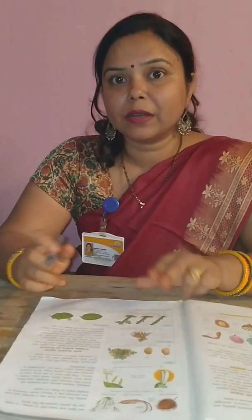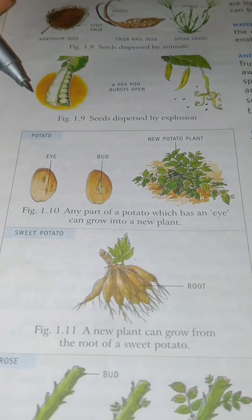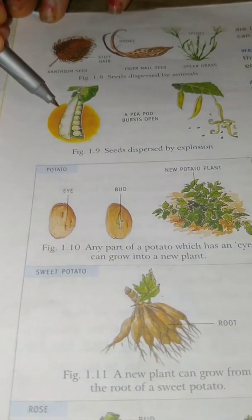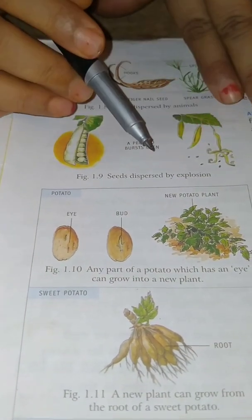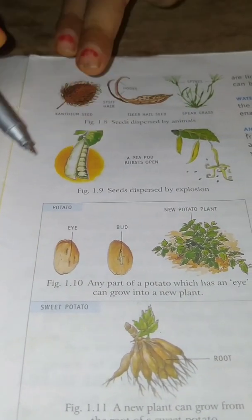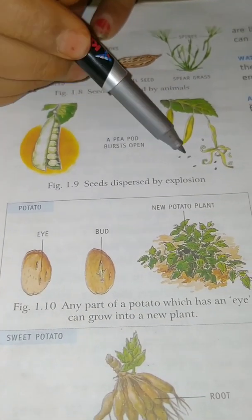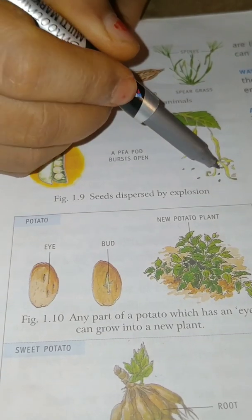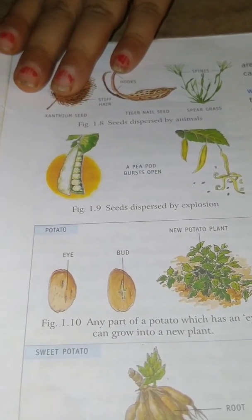Now how explosions help in dispersing seeds, we will see with the help of this figure. When fruits like peas dry, they explode like this and seeds are scattered. When they dry, they burst open and explode. This force of explosion helps the seeds to scatter and they move from one place to another.